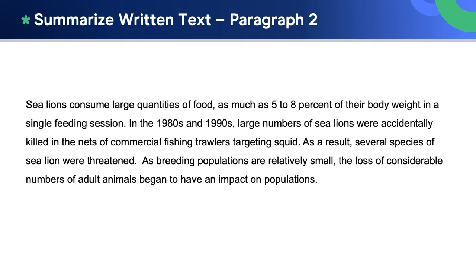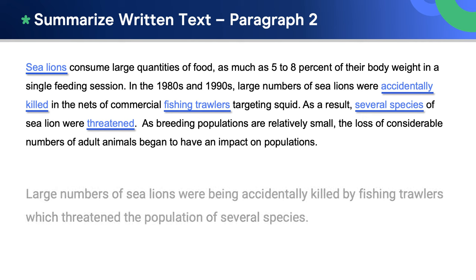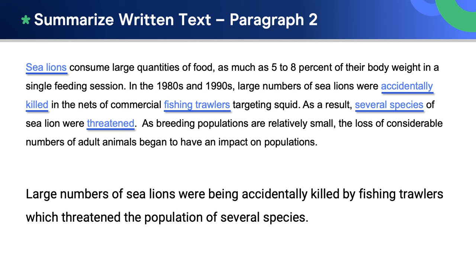Let's now do the same with the second paragraph. The most important words are sea lions, accidentally killed, fishing trawlers, several species, threatened. Let's combine these key words into a summary sentence for the second part of the text. We can write something like this: large numbers of sea lions were being accidentally killed by fishing trawlers, which threatened the population of several species.